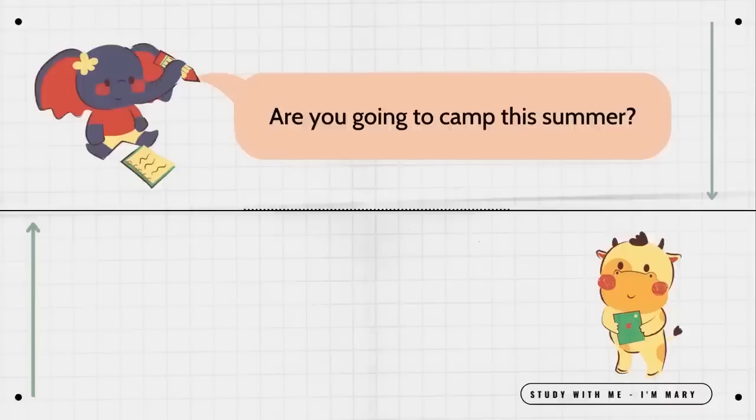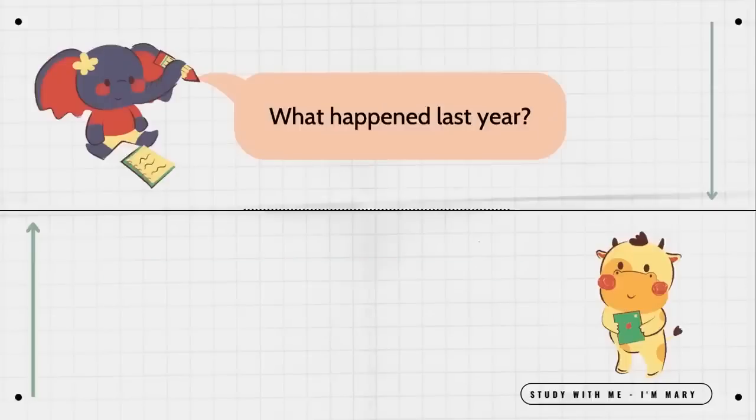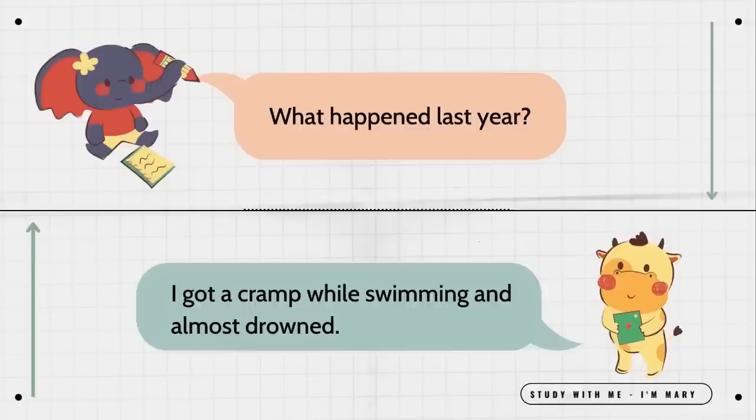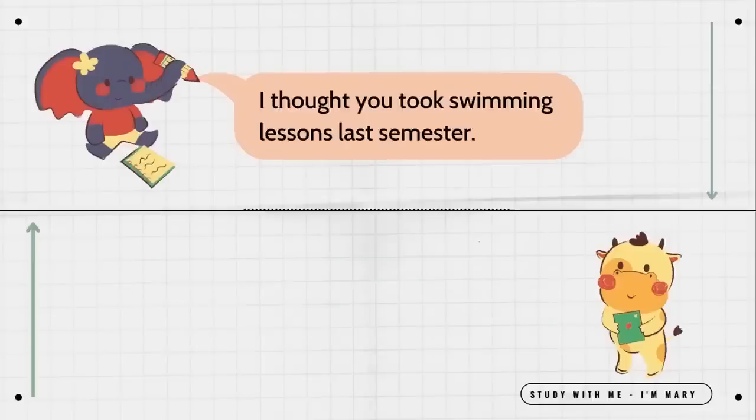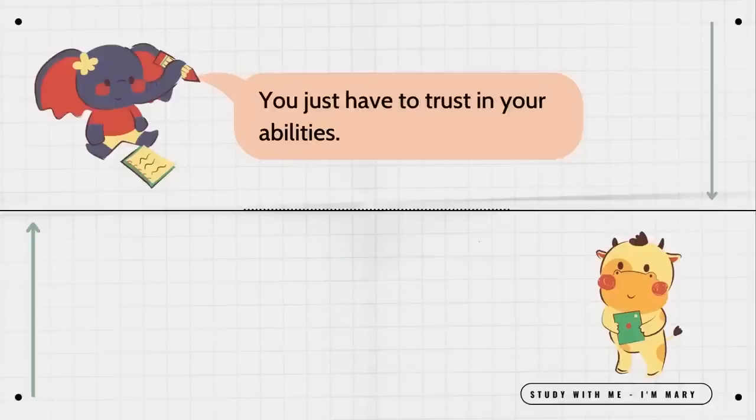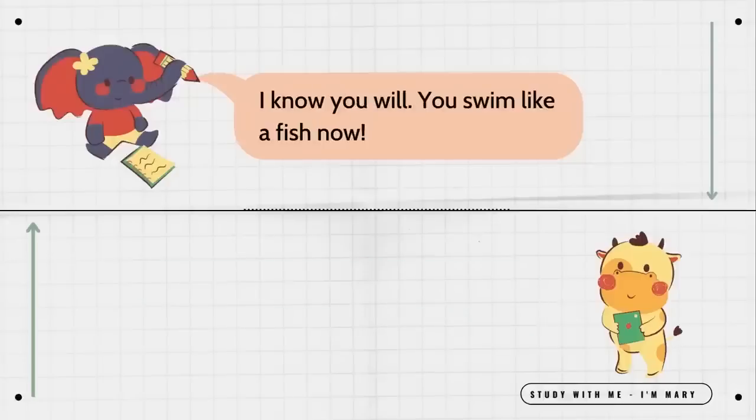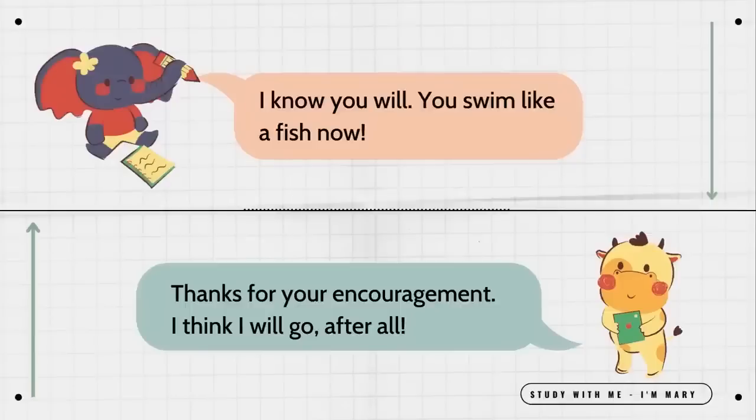Are you going to camp this summer? I don't think so. Why not? I'm kind of traumatized from last year. What happened last year? I got a cramp while swimming and almost drowned. I thought you took swimming lessons last semester. I did, but I'm still afraid anything could happen. You just have to trust in your abilities. Do you really think I'll be okay? I know you will. You swim like a fish now. Thanks for your encouragement. I think I will go after all.